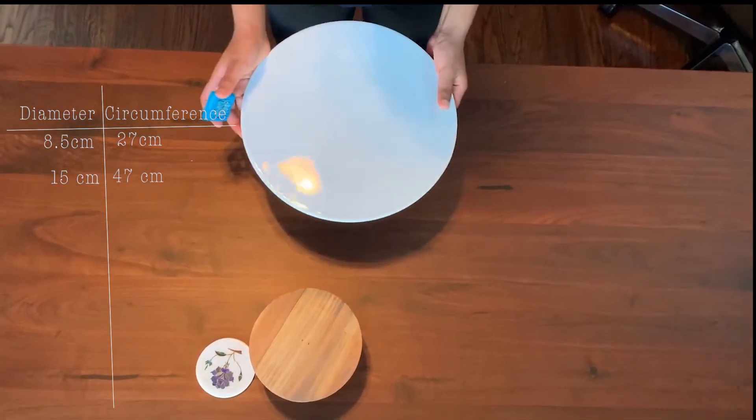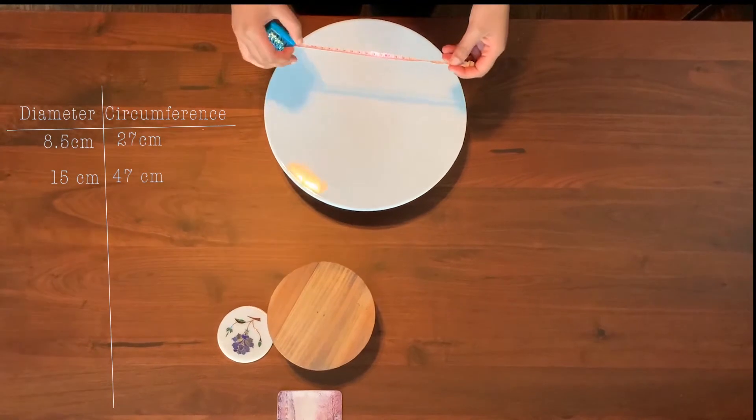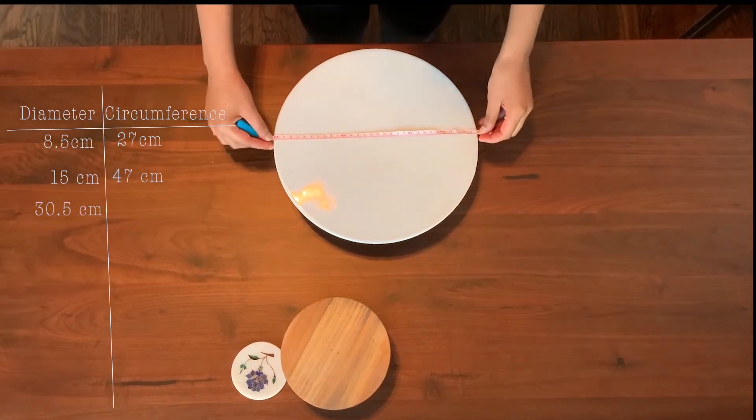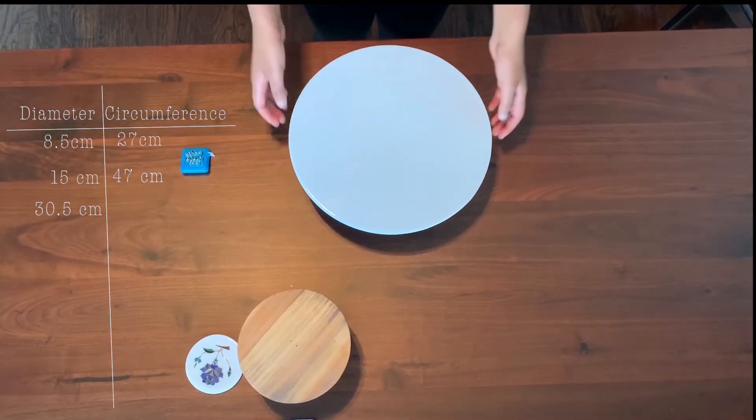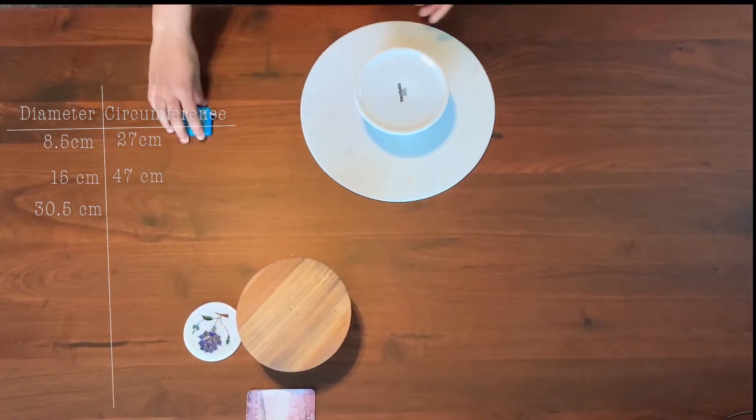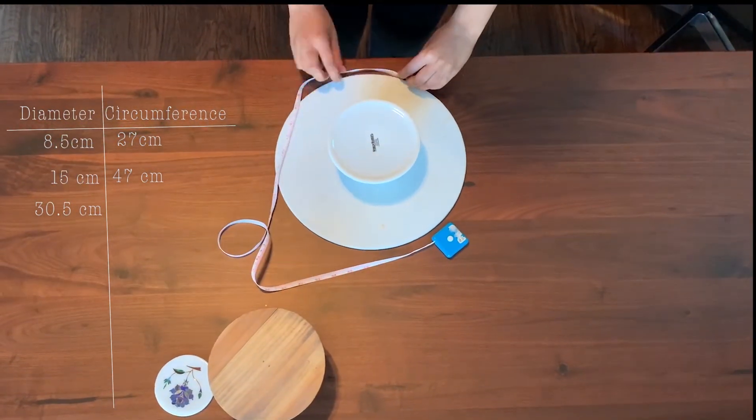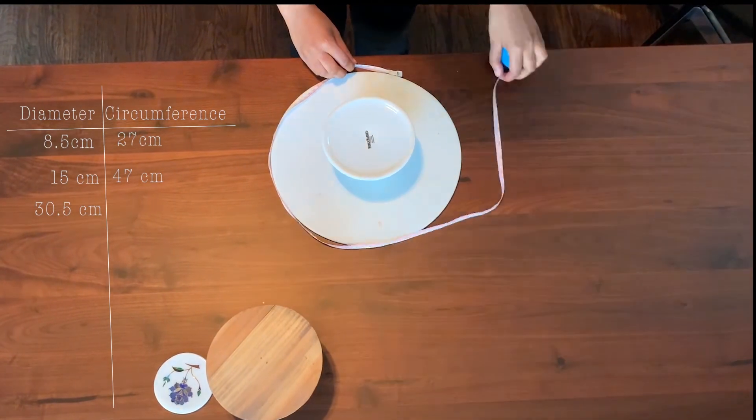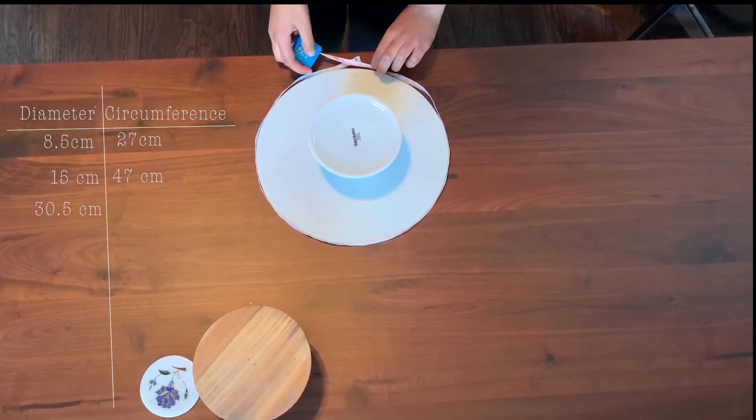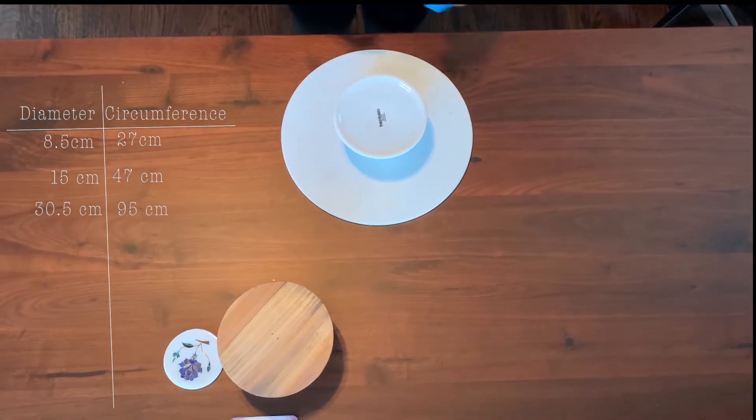Finally, let's find the diameter and circumference of this cake stand. The diameter would be around 30.5 centimeters. Let's now measure the circumference of the cake stand. I'll do so by turning it upside down so it's a little easier to find the circumference of the stand. From this circumference measurement, I get around 95 centimeters. So we'll add 30.5 centimeters and 95 centimeters to our table.